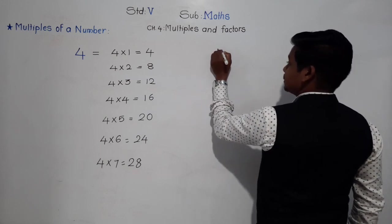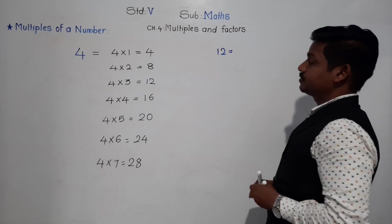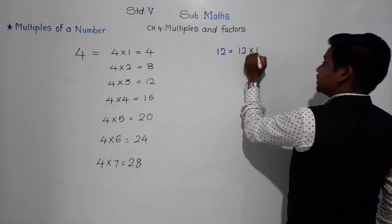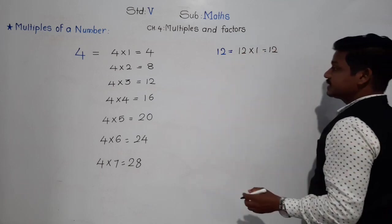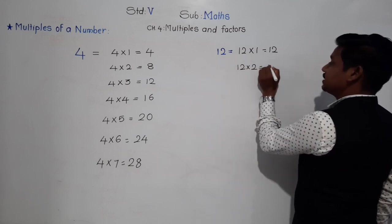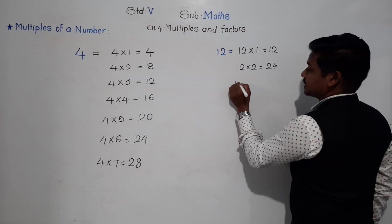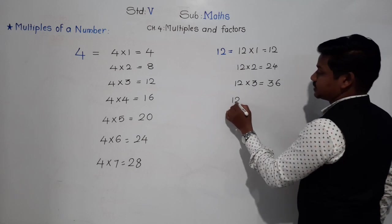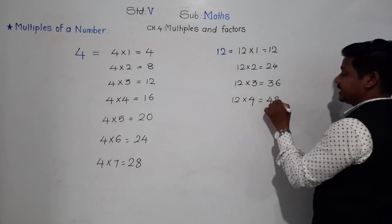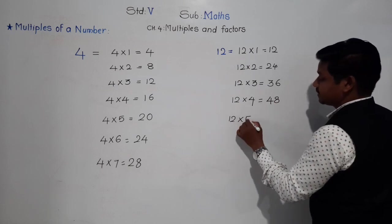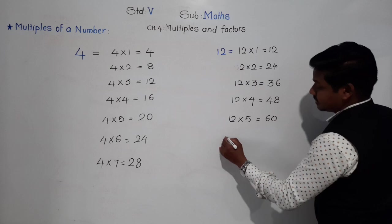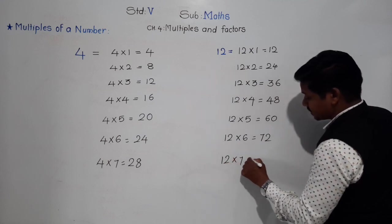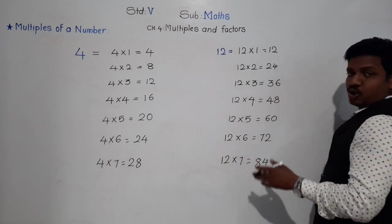Suppose we take the number 12, and we have to find multiples of 12. If we multiply 12 by 1, we get 12. 12×2 = 24, 12×3 = 36, 12×4 = 48, 12×5 = 60, 12×6 = 72, and so on.